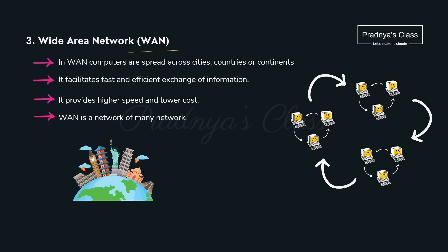The third type is WAN — wide area network. It spreads over cities, countries or even continents. It provides fast and efficient exchange of information. It is essentially the internet. It provides high speed at lower cost. In WAN, smaller networks are connected to each other — that's why WAN is nothing but a network of many networks.